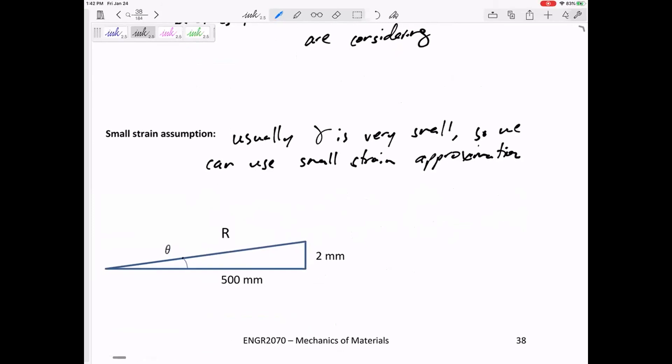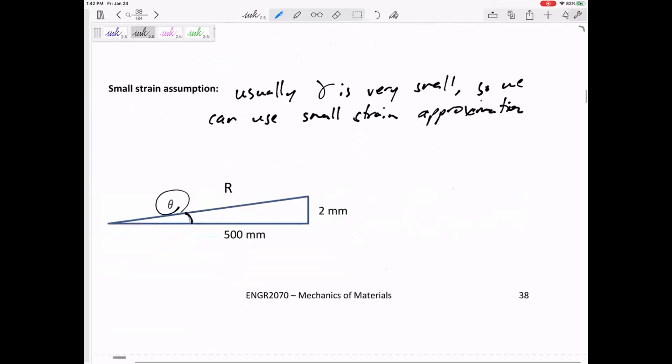All right. So if I wanted to find this angle, let's call it theta. So this is just a little bit of math on small angle formulas. If we wanted to find this angle theta, what I would really do is I would say tangent of theta equals 2 over 500. And so I do 2 over 500, I do inverse tangent on my calculator, and that would give me the angle. Although my calculator is probably in degrees.